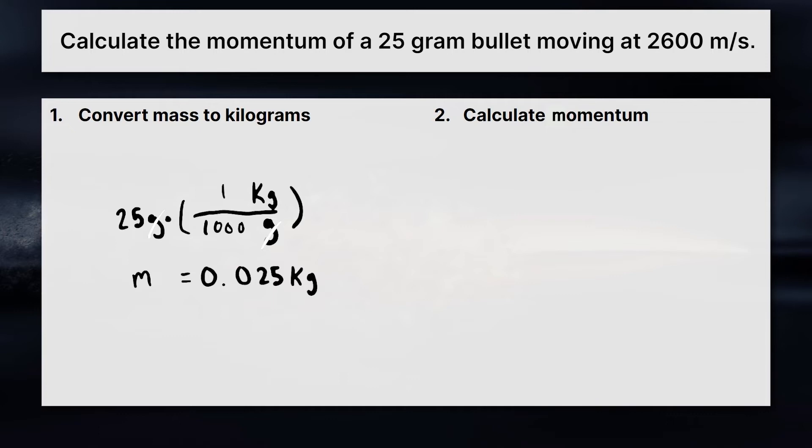And now we're ready to go ahead and calculate momentum. Momentum, remember, is just equal to m times v. So we know momentum is m times v. And we actually already have all of the things we need to just calculate it. So we'll plug in the mass, 0.025, and we'll multiply that by the velocity, which is 2600 meters per second. When we multiply those two things together, we'll get 65.